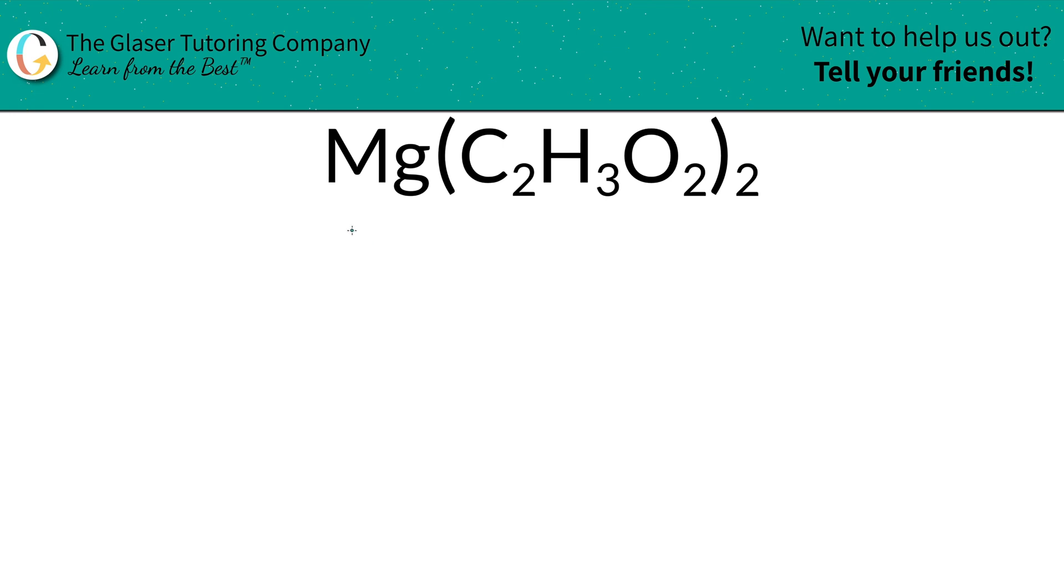Today, I'd like to teach you how to find the percent compositions of each element inside of magnesium acetate. In order to do this, it's a simple two-step process. First, we'll find the total mass, and then we'll find the percents.